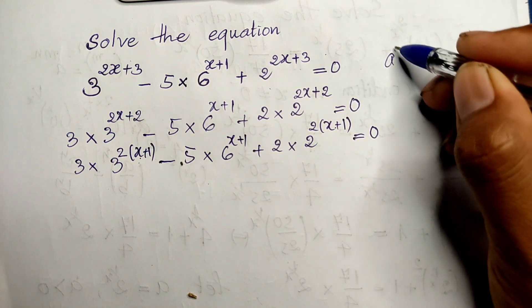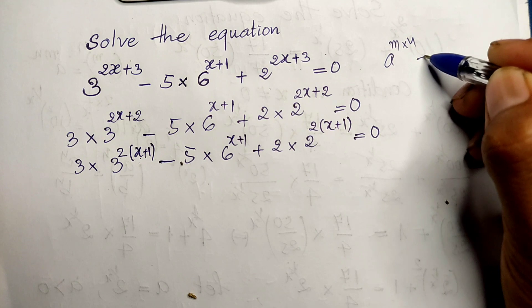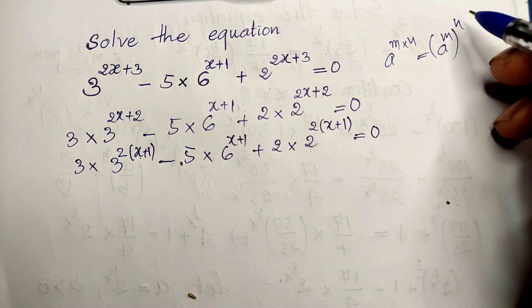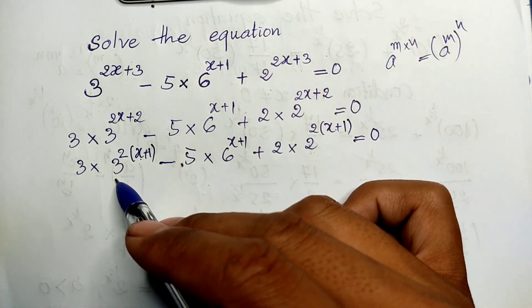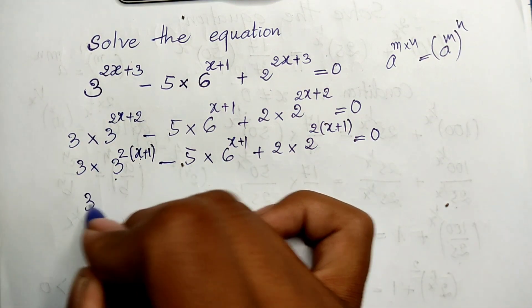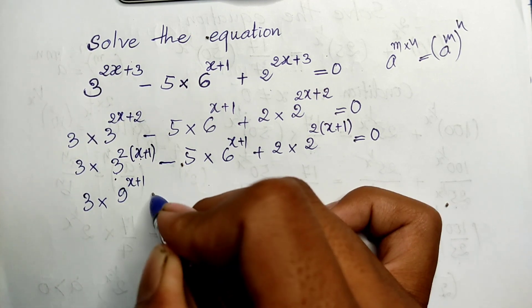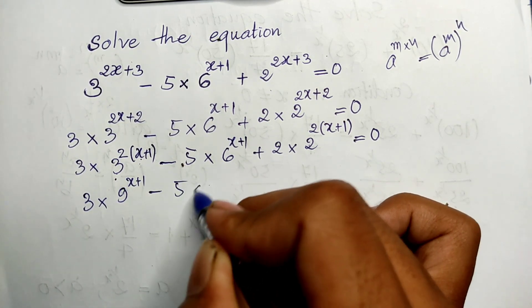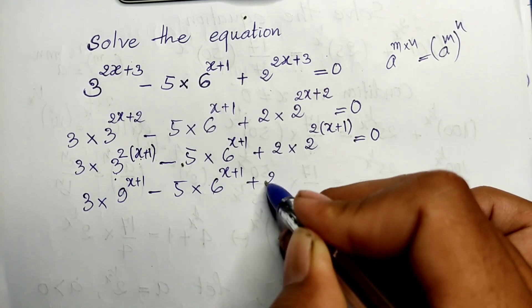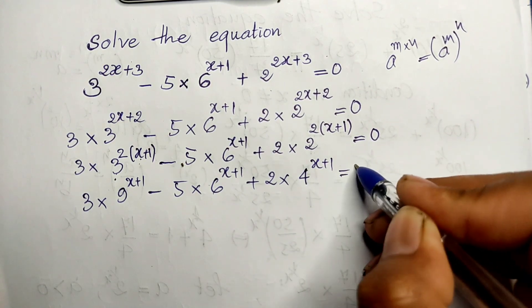We use the rule: a to the power of m times n equals a to the power of m, all to the power of n. Applying this, we get 3 squared all to the power of x plus 1. So we have 3 times 9 to the power of x plus 1, minus 5 times 6 to the power of x plus 1, plus 2 times 4 to the power of x plus 1, equals 0.